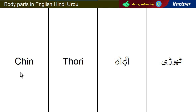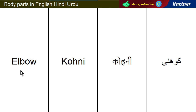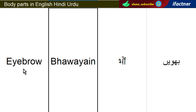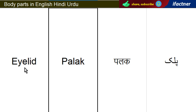Thodi — Chin. Kaan — Ear. Kohni — Elbow. Aankh — Eye. Bhawayn — Eyebrow. Palkain — Eyelashes. Palak — Eyelid.